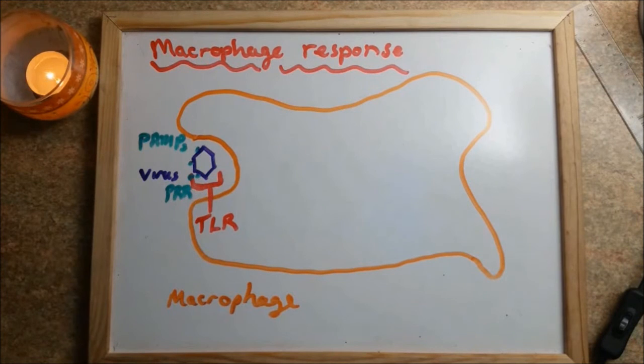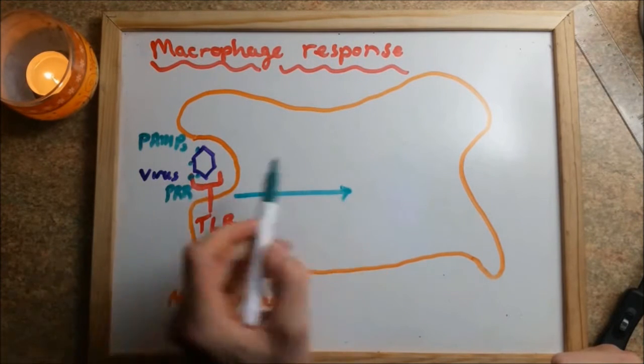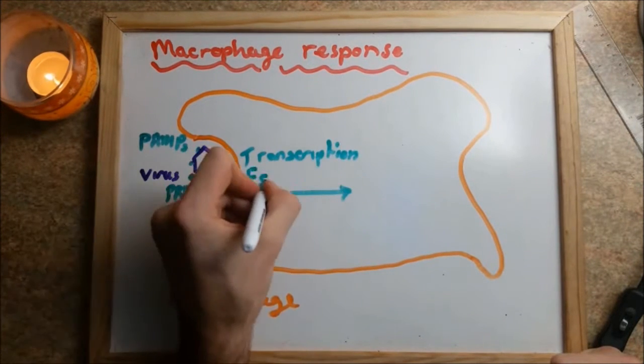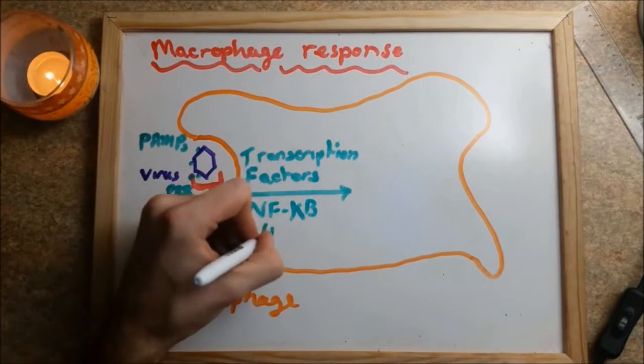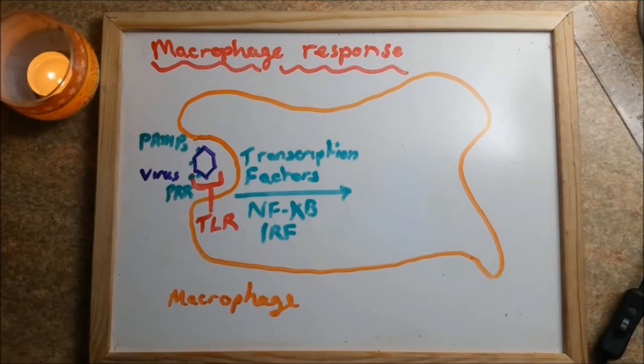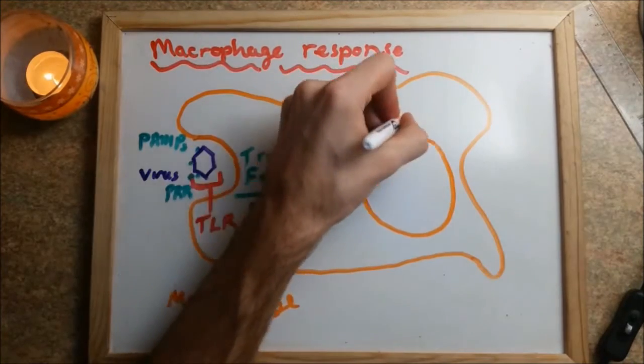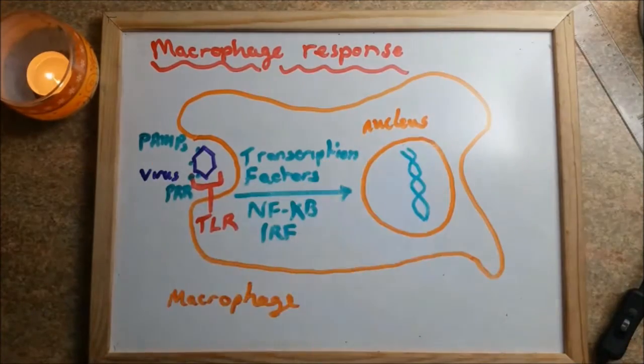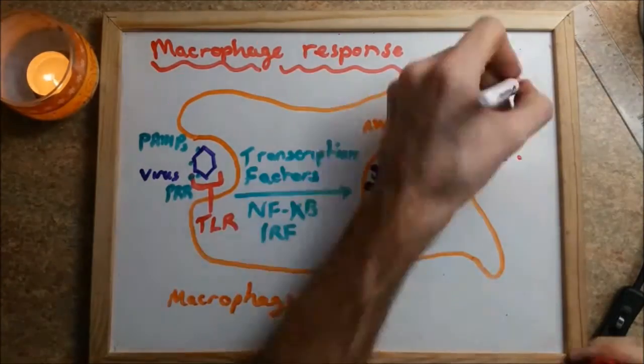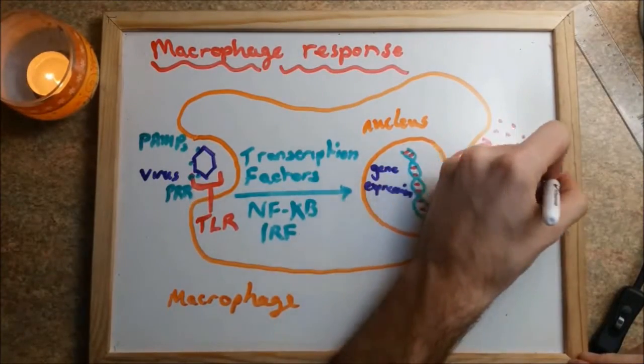Upon internalization, a signal transduction pathway will be initiated, ultimately leading to the production of NF-kappaB or IRF transcription factors. These transcription factors enter the cell nucleus where they activate the transcription of genes that are subsequently transcribed into cytokines. These cytokines are exocytosed from the cell.